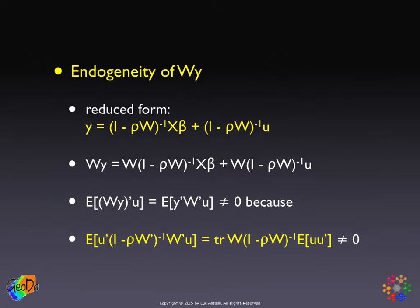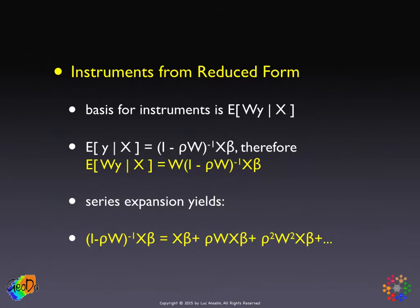Given simultaneous equation bias, one solution is to carry out instrumental variables regression. This is an alternative to the maximum likelihood approach, and a very attractive one especially in large datasets, because we don't have to make any distributional assumptions. The question is: what are the instruments? Typically in a simultaneous equation setting you have endogenous and exogenous variables, and instruments come from the system of equations as the excluded exogenous variables. But here we only have one equation, so we cannot apply that principle.